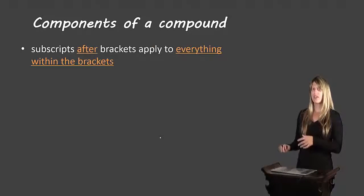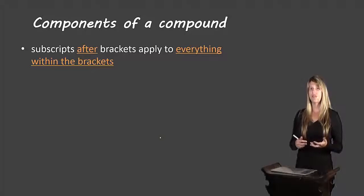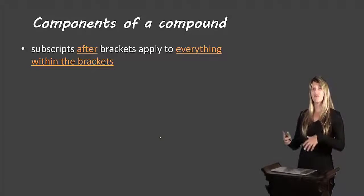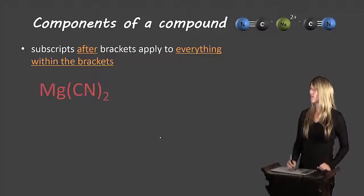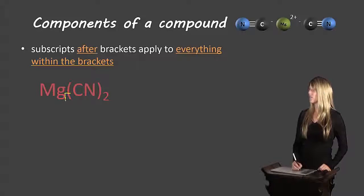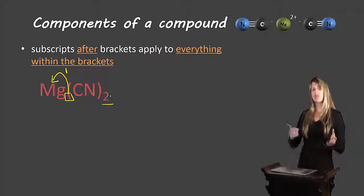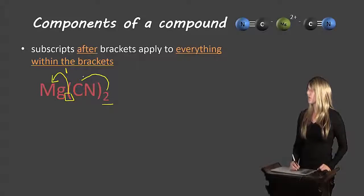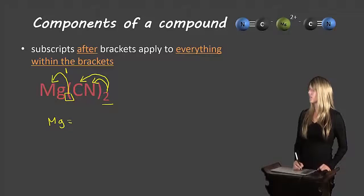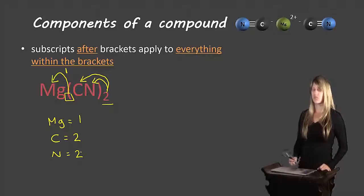Our second rule: subscripts after brackets apply to everything within the brackets — not just the one preceding atom, but everything inside. Let's take a look at an example. For Mg(CN)2: the Mg has no subscript, so that means one magnesium. The subscript two comes outside the brackets, so it applies to everything inside — both the carbon and the nitrogen. So we have one magnesium, two carbons, and two nitrogens.